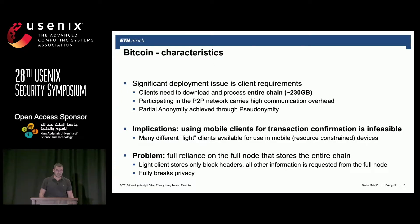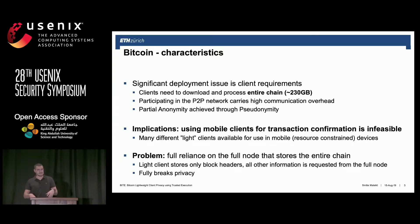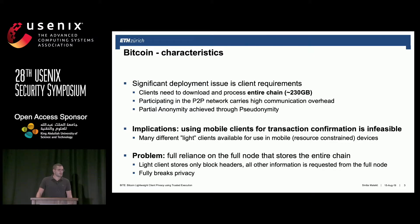You lose that with the lightweight client. Why is this important? As one recent study says, there are around 5.8 to 11 million active Bitcoin wallets, and there are only around 10,000 full nodes. The estimation from recent work says that from four to nine million wallets are actually lightweight clients.